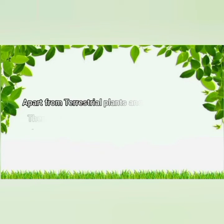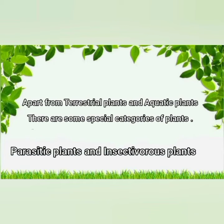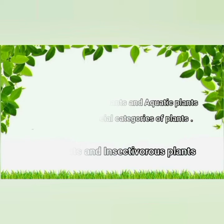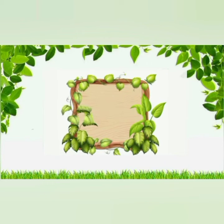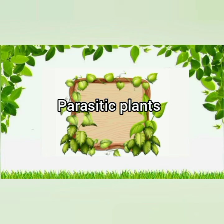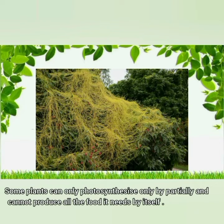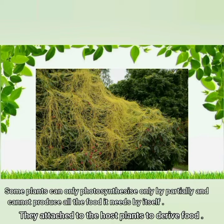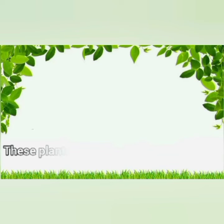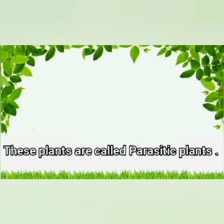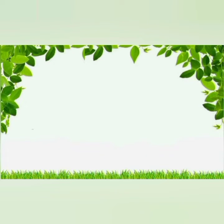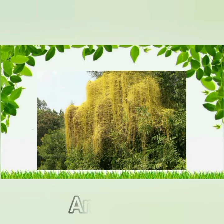Apart from terrestrial plants and aquatic plants, there are some special categories of plants: parasitic plants and insectivorous plants. Parasitic plants can only partially photosynthesize and cannot produce all the food they need by themselves. They attach to a host plant to derive food. These plants are called parasitic plants. For example, cuscuta or amarbel.